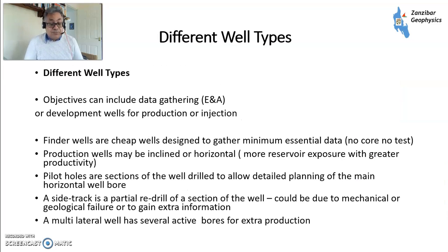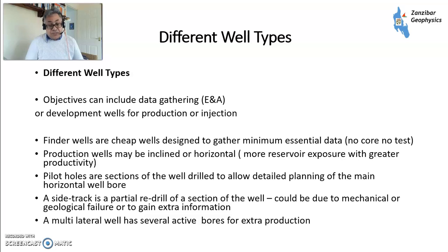Let's talk about the different types of wells. I'm going to talk mainly about E&A wells — exploration and appraisal — where the objective is data gathering. You also have production wells where the objective is to produce hydrocarbons. A finder well is a relatively cheap well that gives you minimum essential data — no core, no testing — just to confirm hydrocarbons and reservoir are present. Then you do a full-scale appraisal well later, which has all of that.